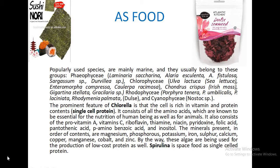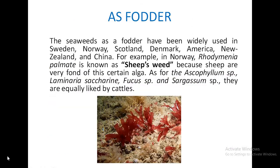Some red algae such as Gelidium and Gracilaria are used in ice cream and jelly. Chlorella, a unicellular green alga, is a good source of protein, lipids, and many mineral nutrients. Spirulina is a space food and is used as a single cell protein (SCP) in the diet for many applications.